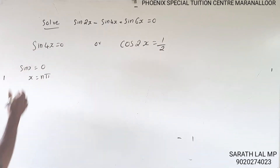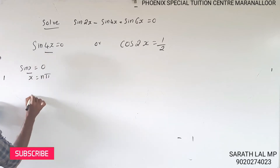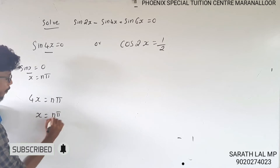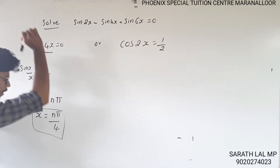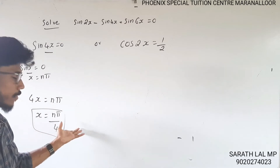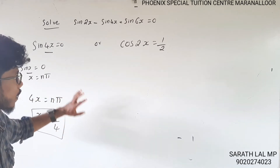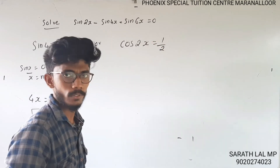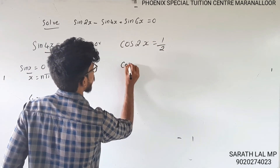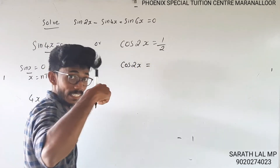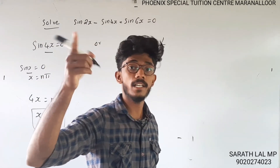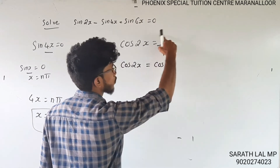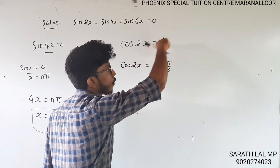For sin4x = 0: 4x = nπ, so x = nπ/4. For cos2x = 1/2: since cos60° = 1/2 and 60° = π/3, we also note cos(5π/3) = 1/2. So we apply the general cosine formula.